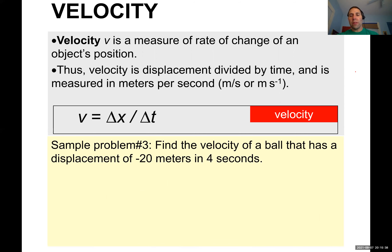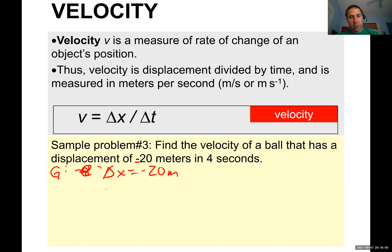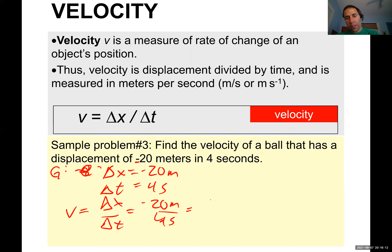Sample problem: find the velocity of a ball with a displacement of negative 20 meters in four seconds. The negative direction is the direction the ball moved. Given: displacement equals negative 20 meters, change in time equals four seconds. Velocity equals displacement over time: negative 20 meters divided by four seconds equals negative five meters per second. The negative sign gives the direction.